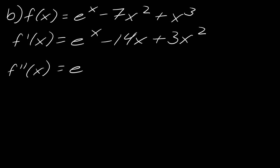F double prime is going to be e to the x minus 14 plus 6x. f triple prime is e to the x plus 6x. And then the fourth derivative.